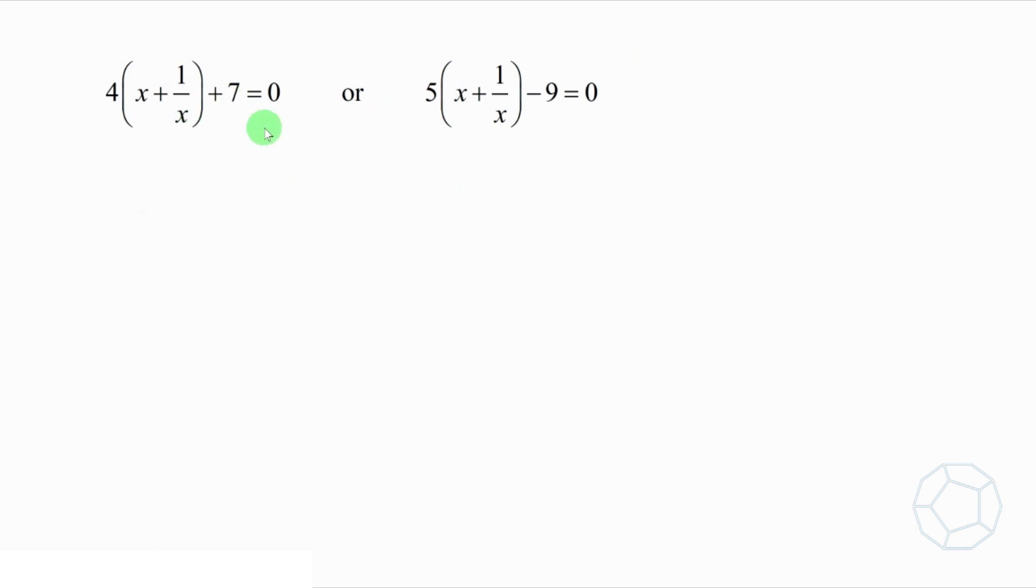Next, we multiply x on both sides to get rid of the denominator. Then the two equations are 4x² plus 7x plus 4 is equal to 0, or 5x² minus 9x plus 5 is equal to 0.